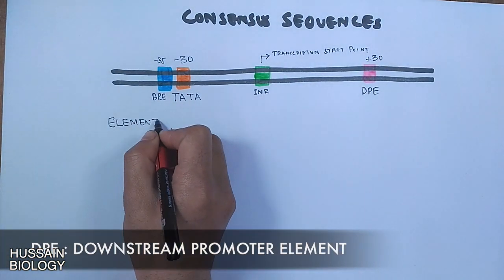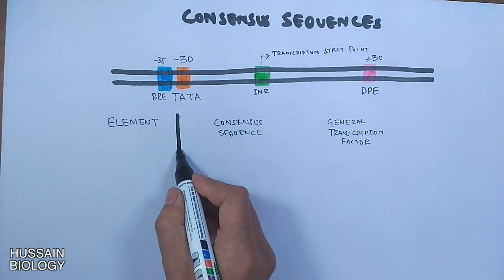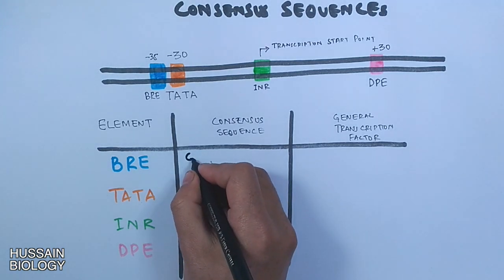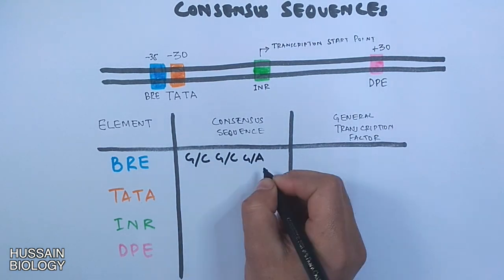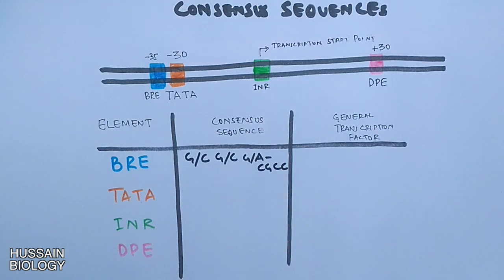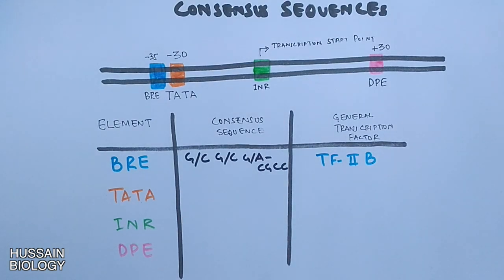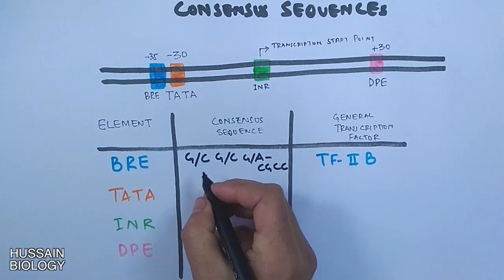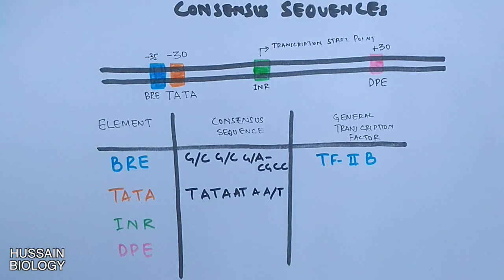Now let's see what are the consensus sequences for these elements. The BRE element has got consensus sequences as G or C, G or C, G or A, then CGCC. And to this element transcription factor 2B binds. Then we have TATA box with a sequence of TATAAT, AA or T, and to this TBP subunit binds.